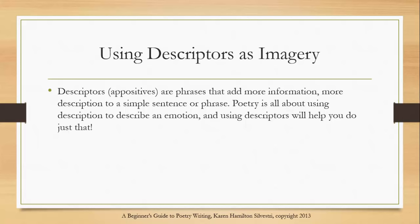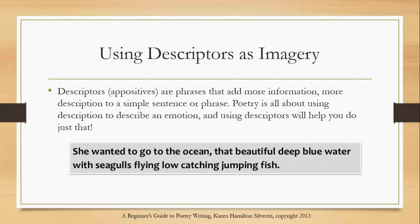Remember, poetry is all about using description to describe an emotion, and using descriptors will help you do just that. For example, we have the phrase: she wanted to go to the ocean. Now everyone is going to get a different picture of the ocean in their head. But if we add descriptors, we get much closer to the image that the writer wants you to see: she wanted to go to the ocean, that beautiful deep blue water with seagulls flying low, catching jumping fish. Don't you see a totally different picture than you did from just the first phrase?